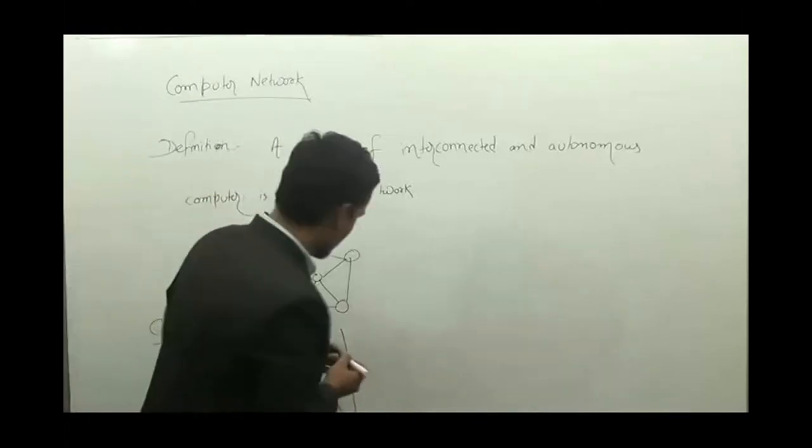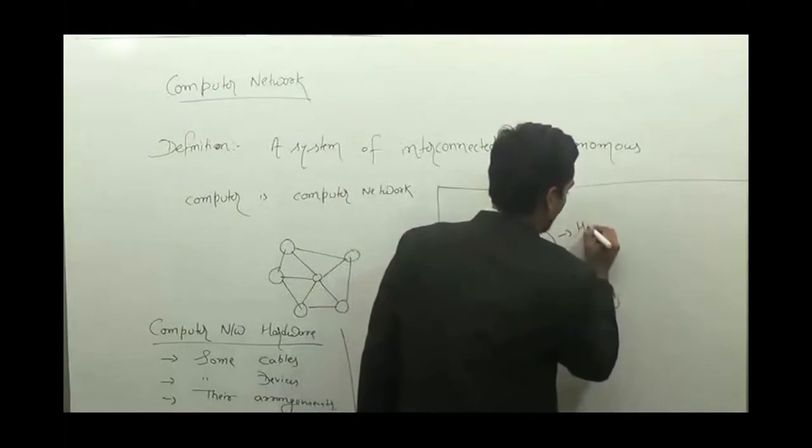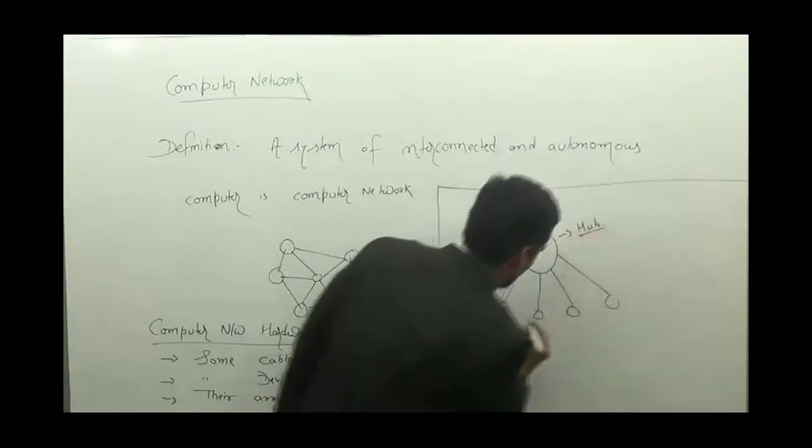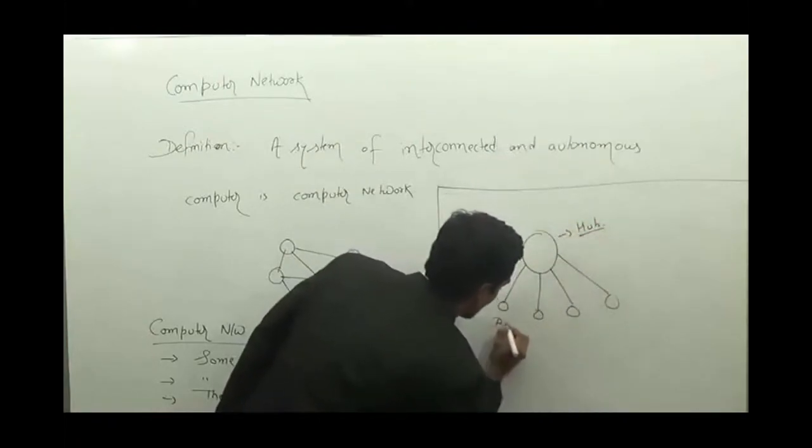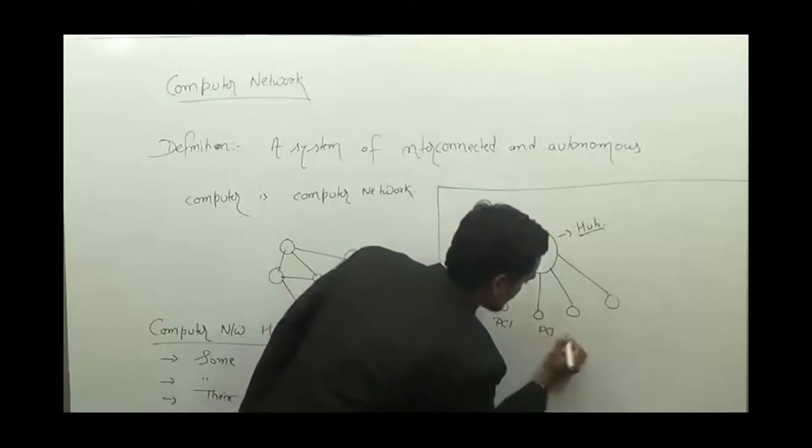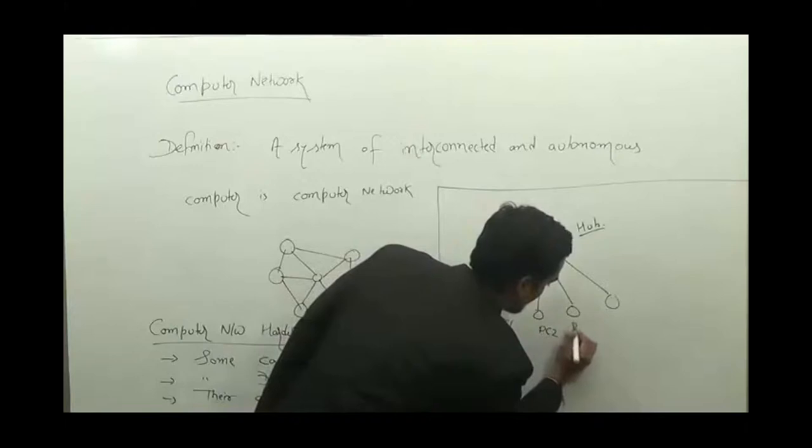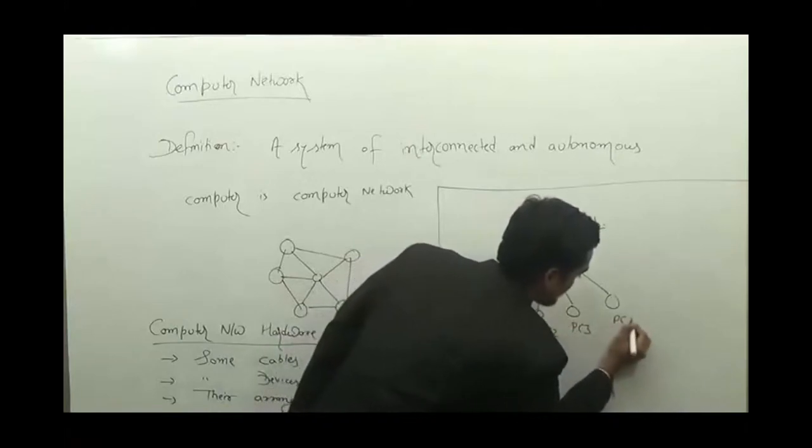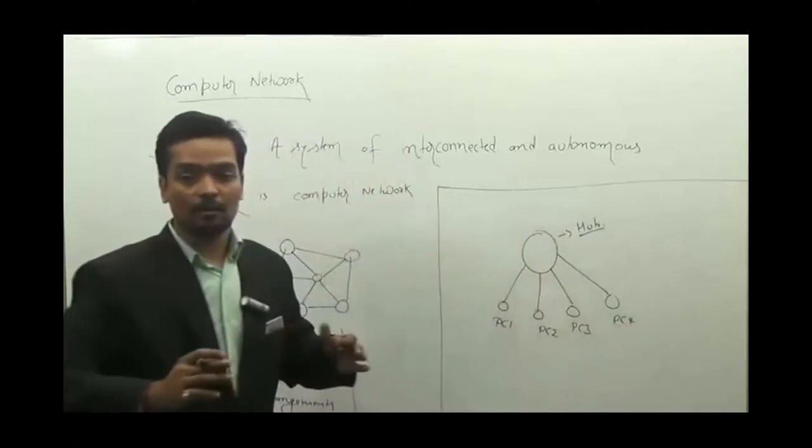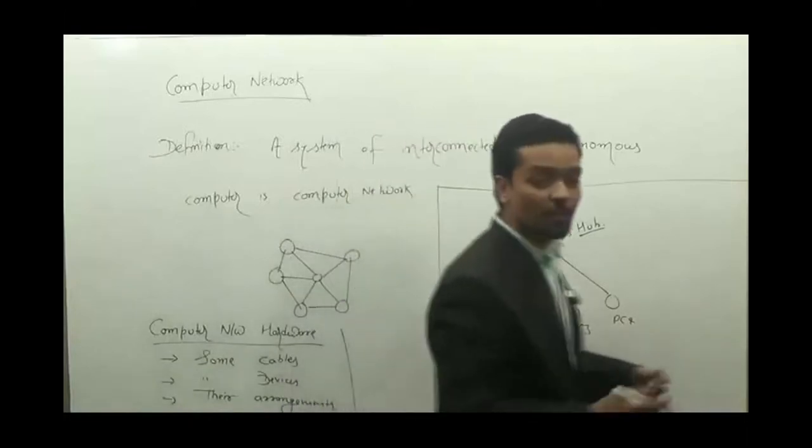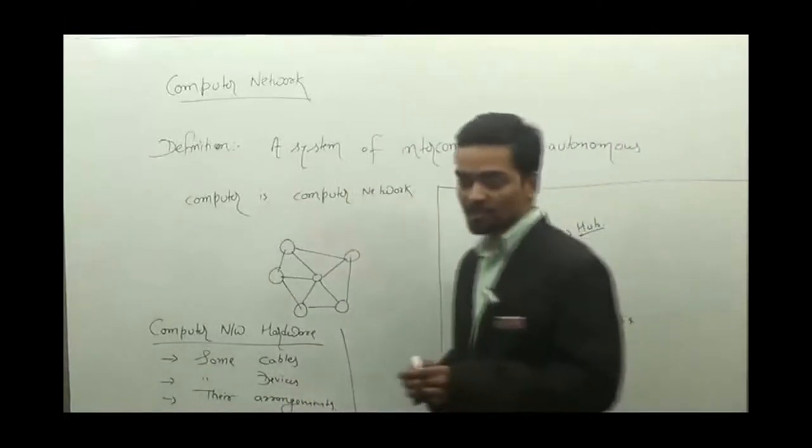That means if this is a hub and this is PC1, PC2, PC3, PC4 - these are independent nodes, independent systems or independent computers, which are connected to each other with the help of this hub.